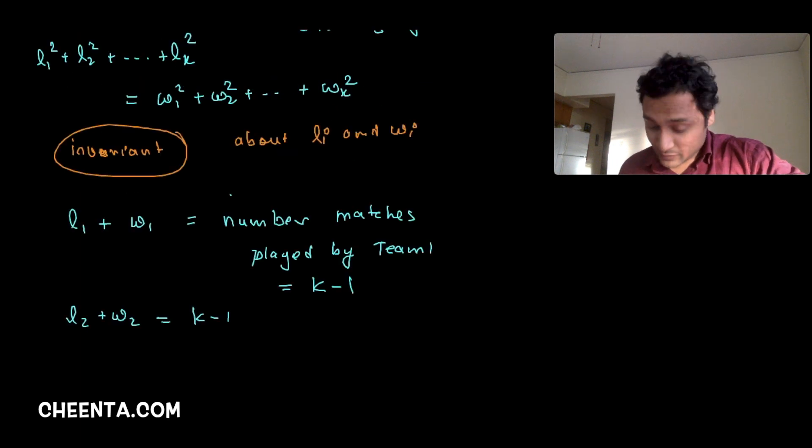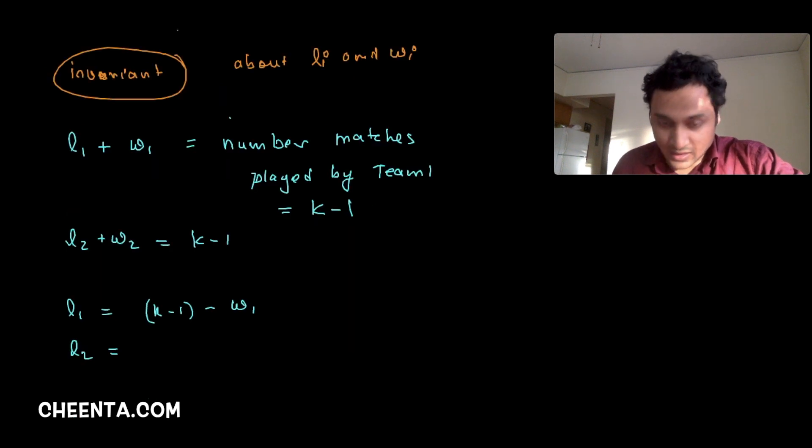Okay, so then what can we say? Well, we can say that L1 equals to K minus 1 minus W1. L2 is equal to K minus 1 minus W2 and so on. So we can say it like this. Now, let's square and add. Let's square and add. So if I square and add, what do I get?